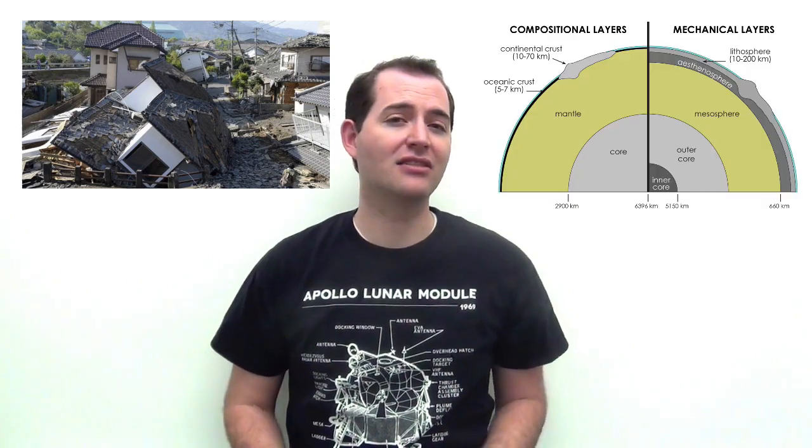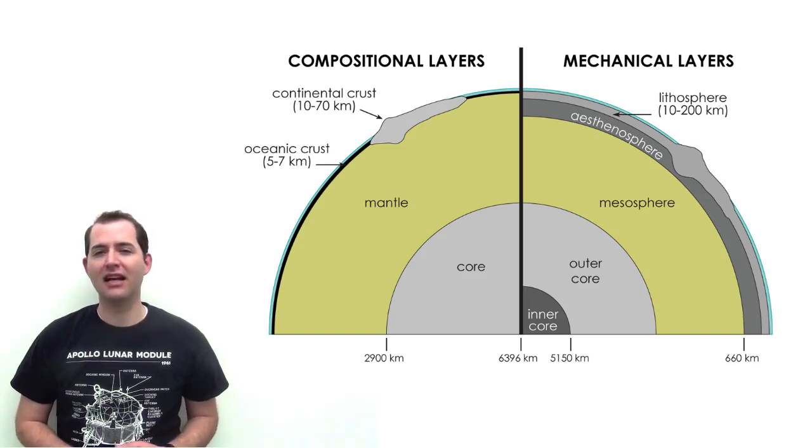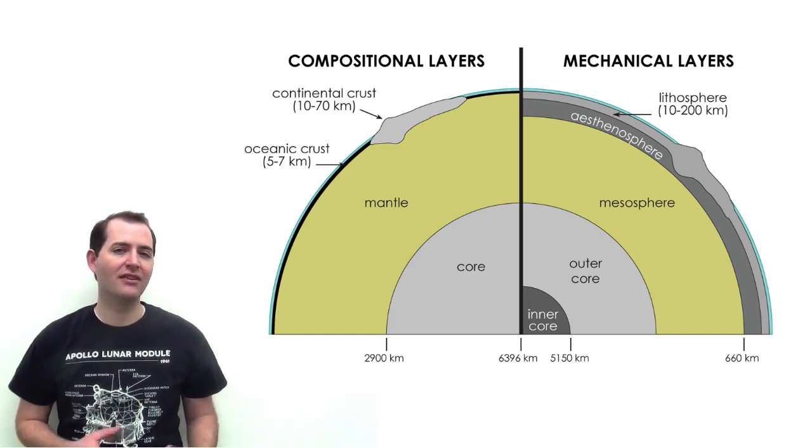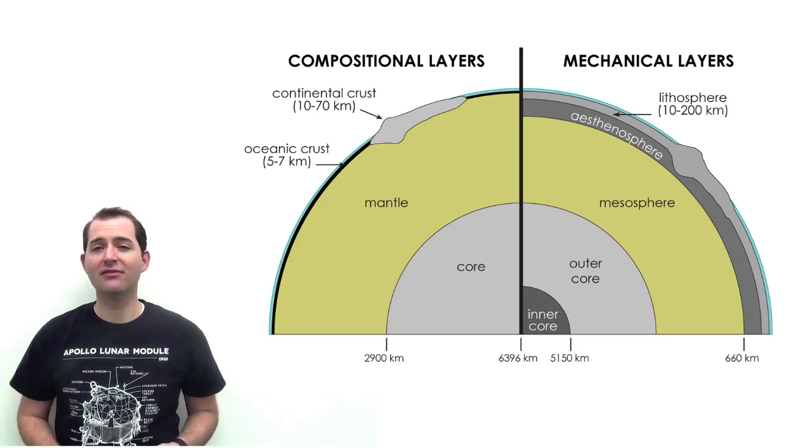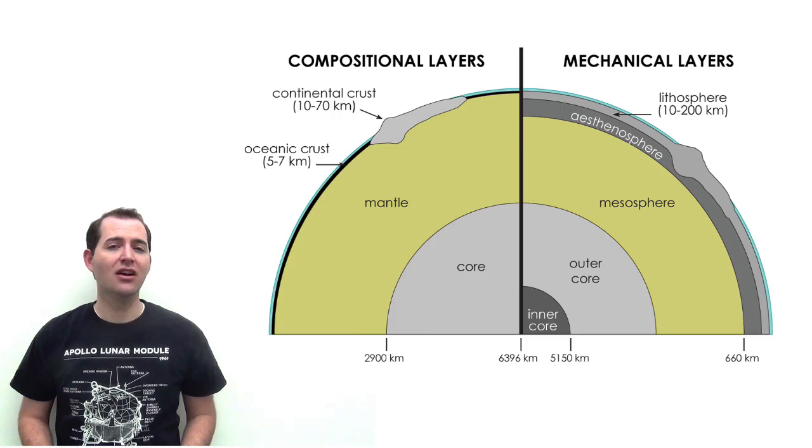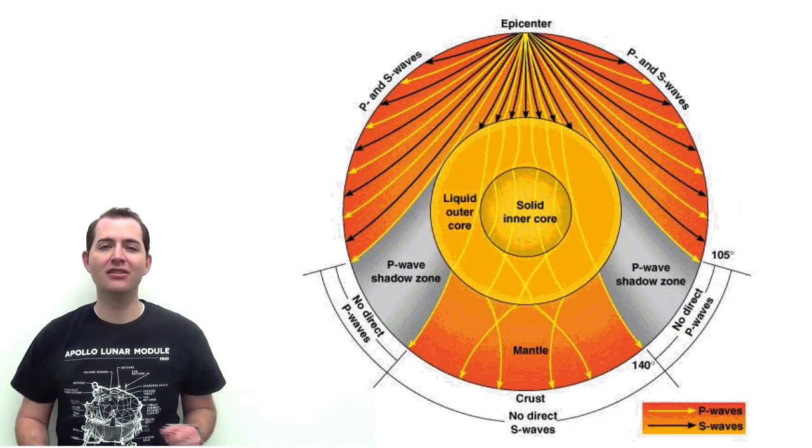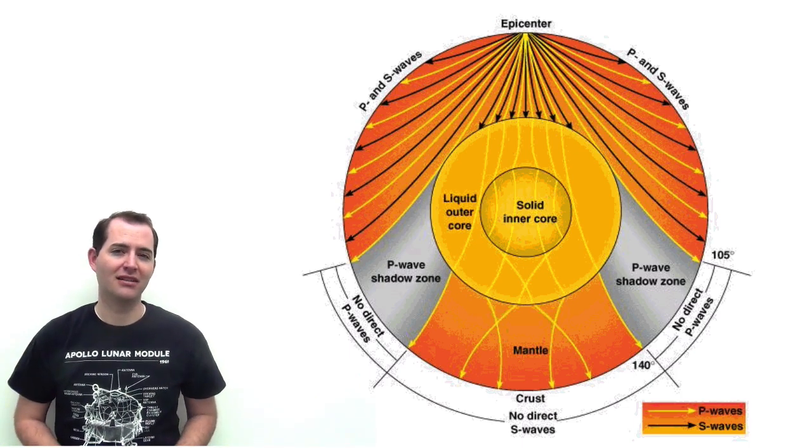While earthquakes and seismic waves are dangerous, they are critical in the development of our understanding of the layers of the Earth. P and S waves are the primary tool that scientists use to understand what the properties are of each of the layers of the Earth. Because P and S waves travel differently through liquids and solids, we can use the waves from earthquakes to be able to understand what the layers of the Earth are, and what their mechanical properties are.